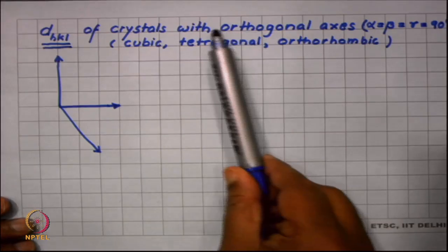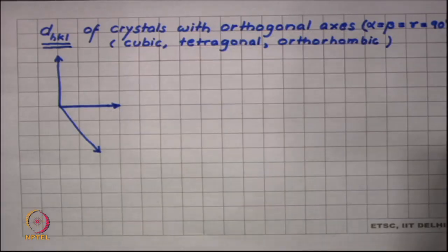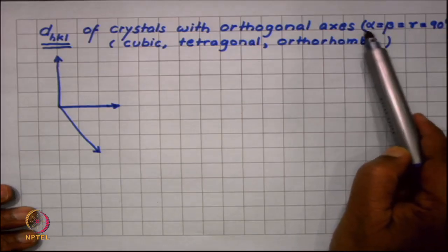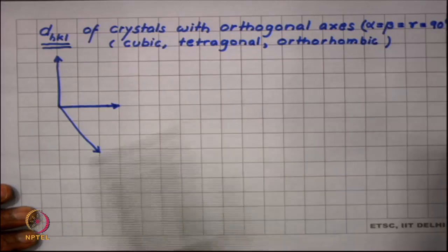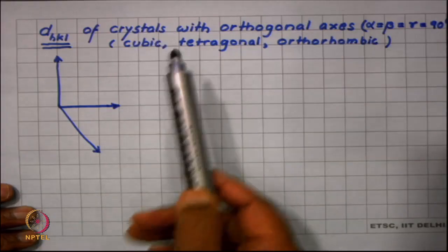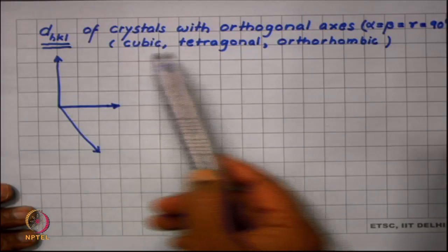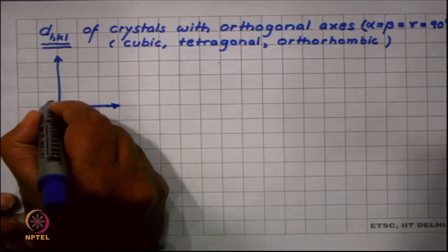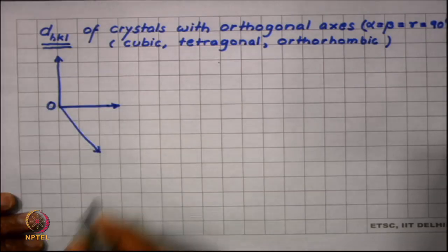We are assuming the crystal to have orthogonal axes, and that is a crystal system in which all three interaxial angles are 90 degrees. Such systems include cubic, tetragonal, and orthorhombic. For these systems the derivation becomes simple.